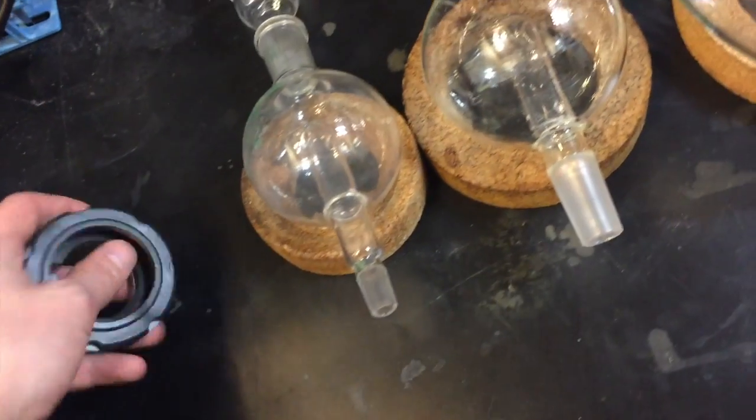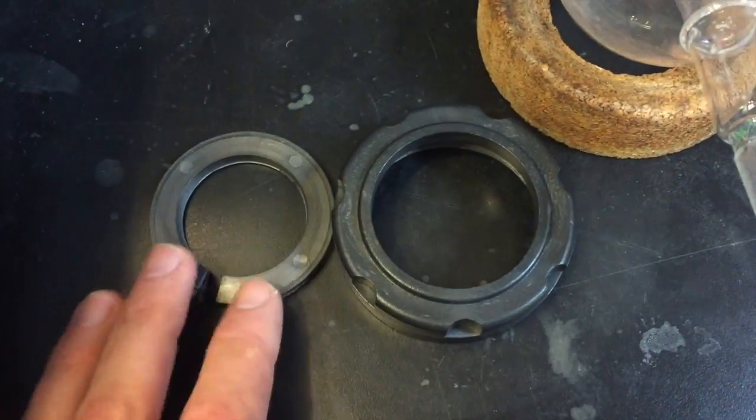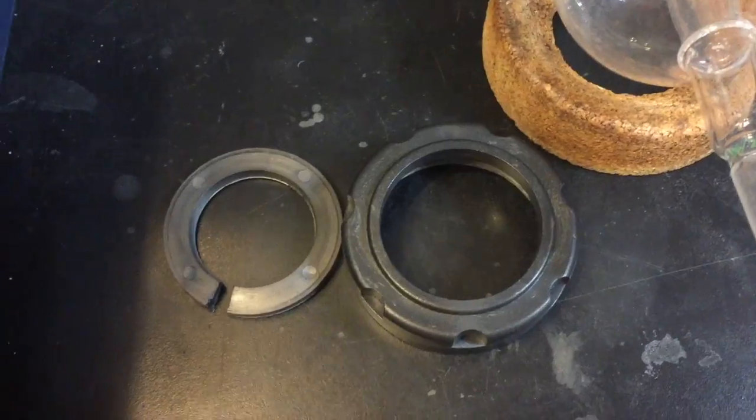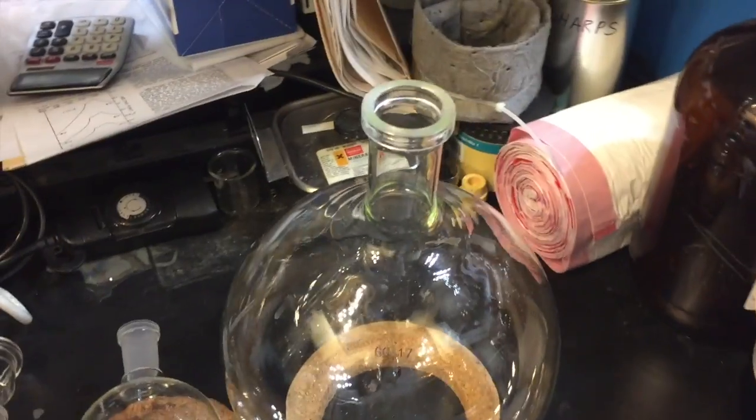So under the screw cap, there's a little grommet, just a little plastic grommet. And these two together, along with the 5-liter glassware, are what comes standard with the instrument.